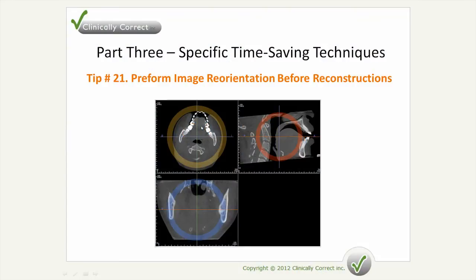Tip number 21: perform image reorientation before reconstructions. This is one of the most important steps before making any image reconstructions with a case. Reorientation is essential to ensure that reconstructions are correctly created, and it minimizes the amount of back and forth you have to do when making a perfect reconstruction.